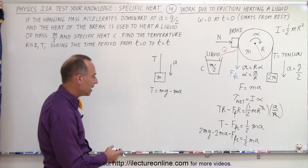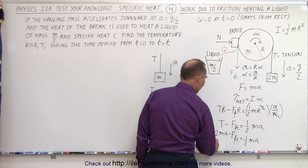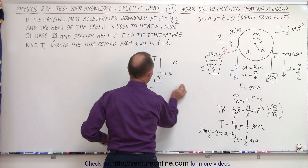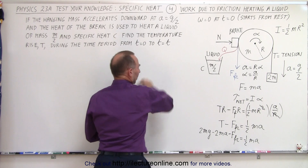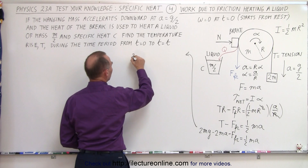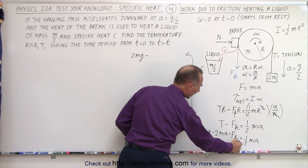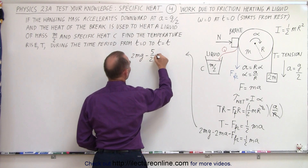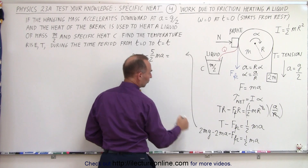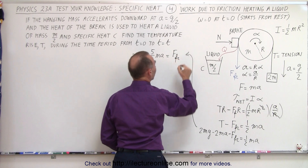We have a 2m times a term and a one half ma term. Bringing that one half m over to the left side, we consolidate those two terms: 2mg minus 4 halves minus a half, which is minus 5 halves ma. Moving terms to the appropriate sides, we get: 2mg minus 5 halves ma equals the friction force.